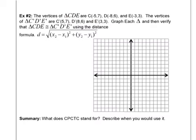The vertices of triangle CDE are C(−5, 7), D(8, 6) — wait, (−8, 6) — and E(−3, 3). The vertices of C′D′E′ are C′(5, 7), D′(8, 6), and E′(3, 3). We're going to graph each triangle and then verify that triangle CDE is congruent to triangle C′D′E′ using the distance formula.